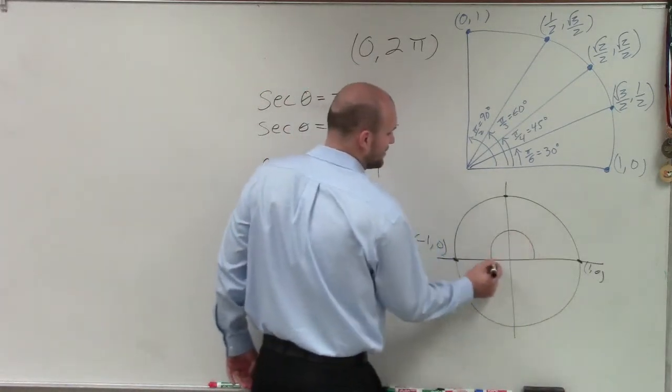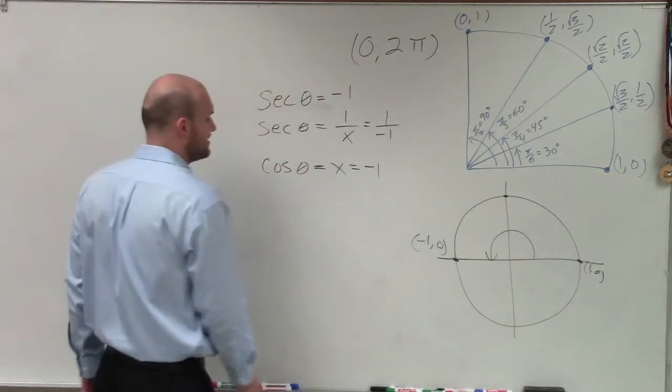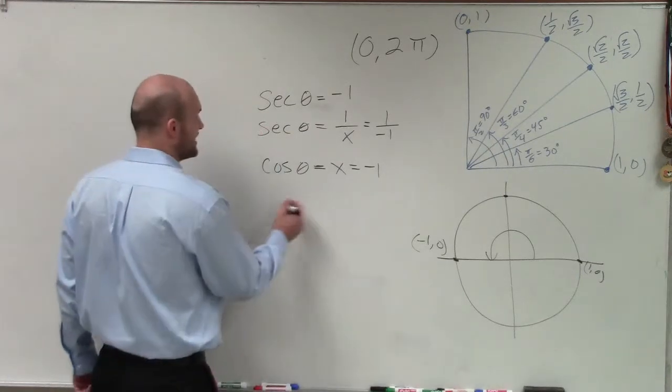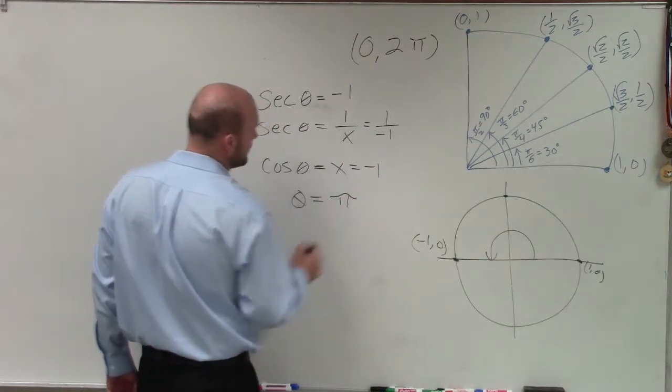Well, remember, if we start here and we go all the way around, halfway around the circle. So all the way around half a circle, that kind of seems weird, but all the way around half a circle is just going to equal pi. So therefore, theta in this example equals the angle pi.